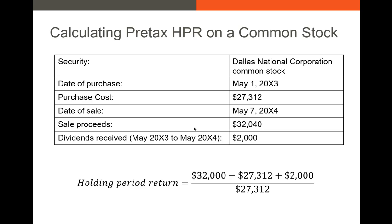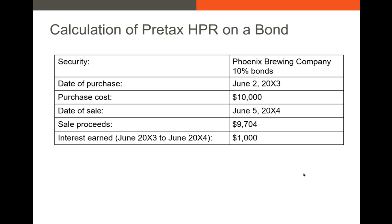Let's look at a quick example. We have a security called Dallas National Corporation — common shares. Date of purchase: May 1st, 20X3; purchase cost was about $27,000. Date of sale: May 7th, 20X4. We received some dividends during that time period. The holding period return is the ending value minus the beginning value plus dividends received, all divided by the purchase cost. Our holding period return comes out to about 24.6%.